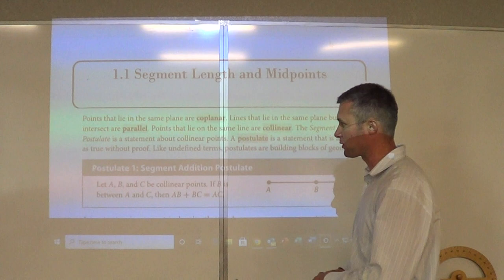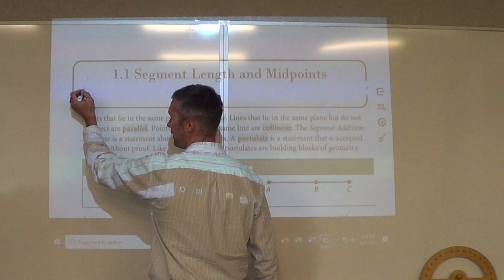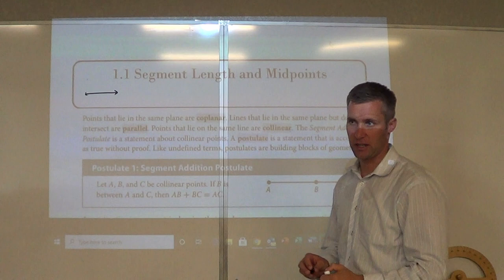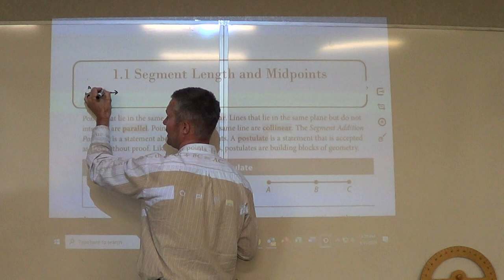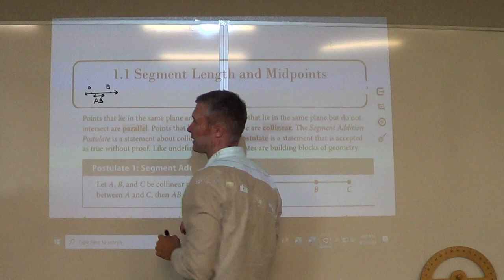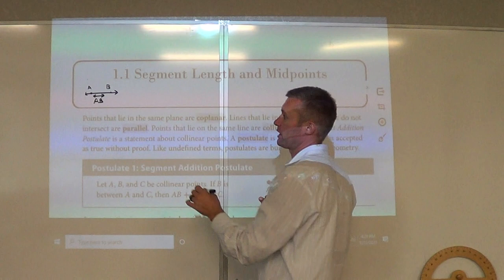So just a couple things for vocabulary purposes. As far as a line, a line goes on forever in either direction, so you're going to see the arrow is on either side. We could name it — so we could say this is A, this is B, so we could say this is line AB. So you have a line that continues in both directions, in opposite directions. This is a line.